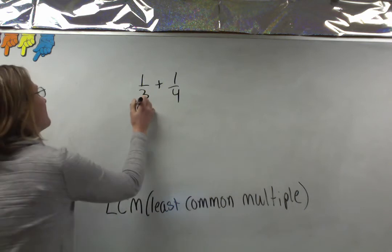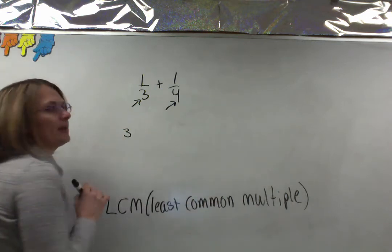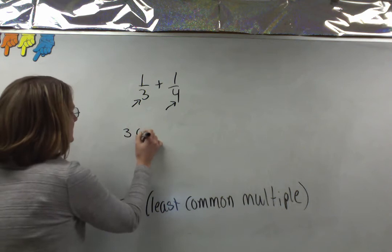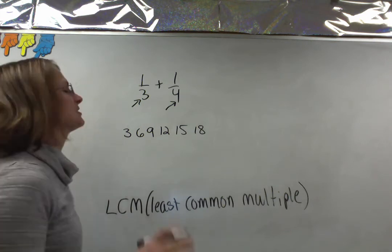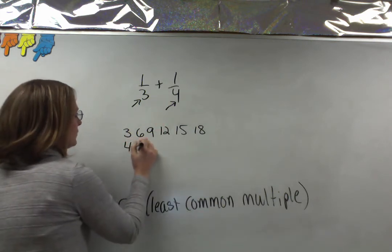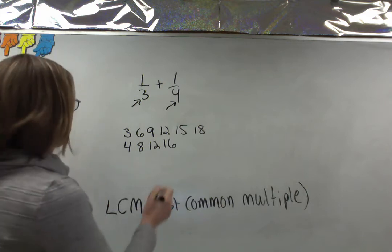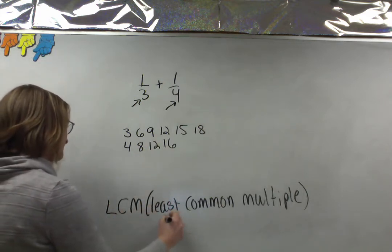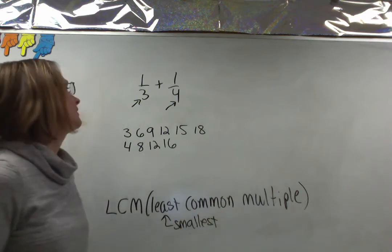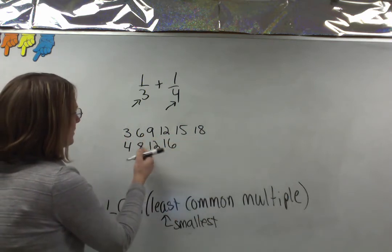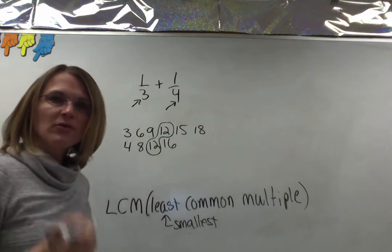I have to find the multiples of my two denominators, which are three and four. Multiples of three: 3, 6, 9, 12, 15, 18. Multiples of four: 4, 8, 12. I'm going to list multiples until I find the smallest number they have in common. Both three and four have a multiple of 12, so 12 is the least common multiple.